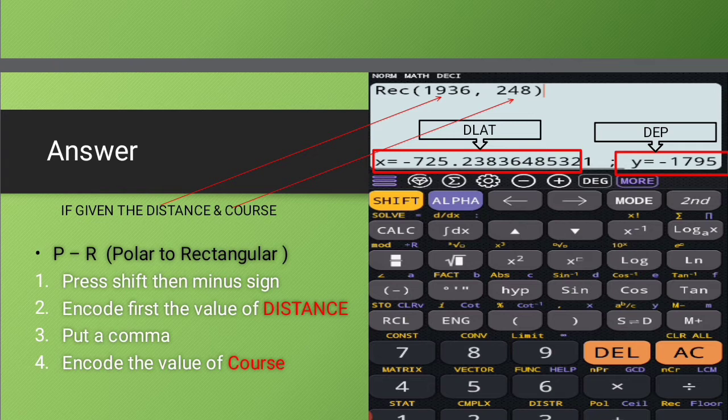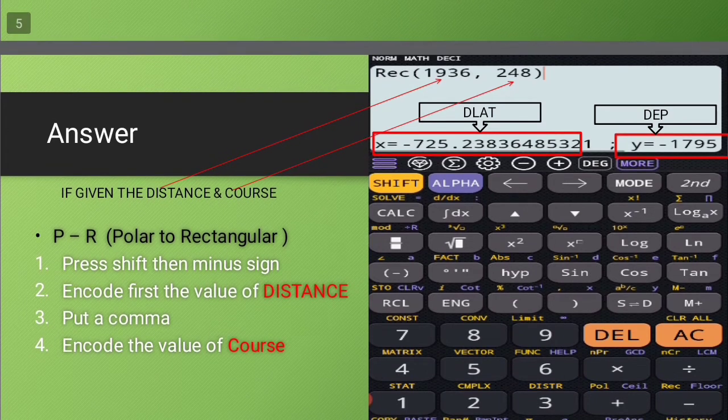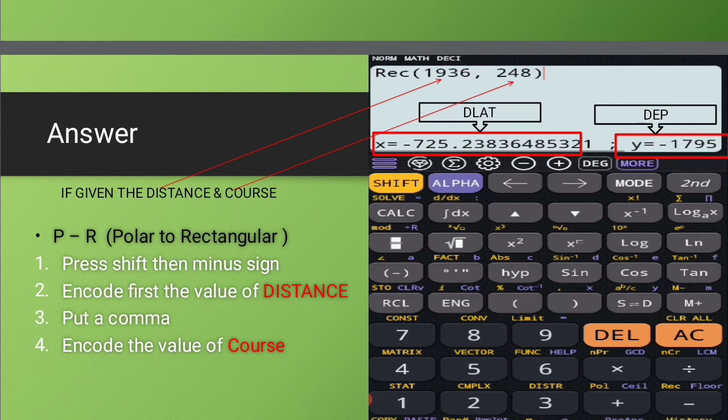The next step is to encode the value of the distance. So the value for the distance is 1,936. Next step, which is also very important, is to put a comma.